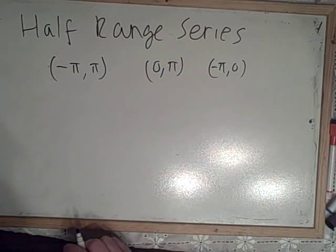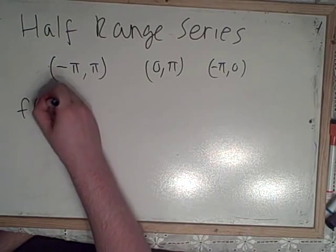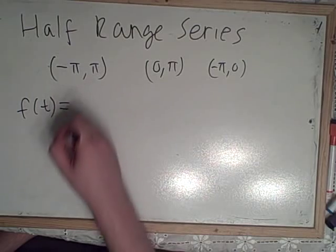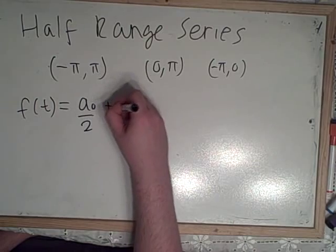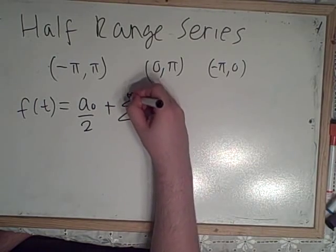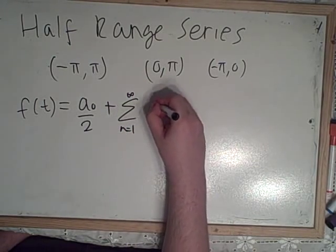Now, to solve this, you have your Fourier series. Your new half range series is a nought over 2 plus the sum from n equals 1 to infinity of a n.